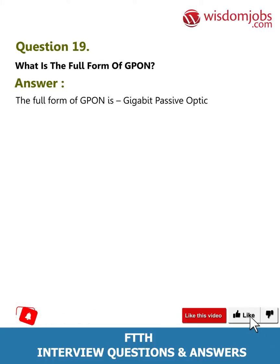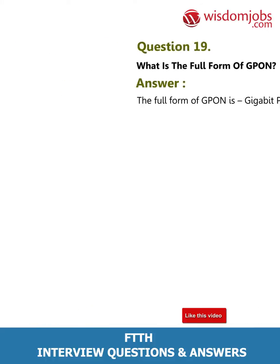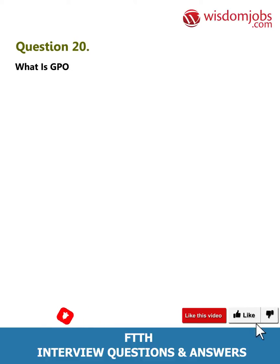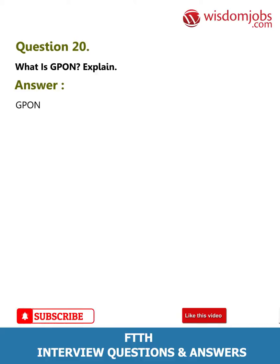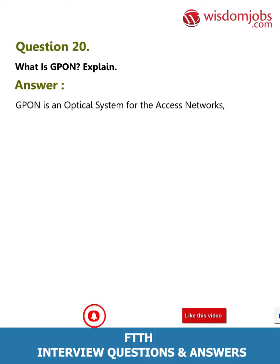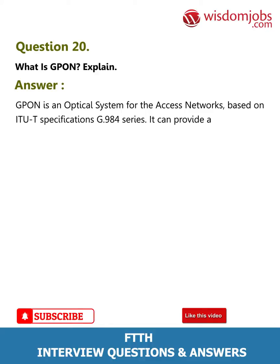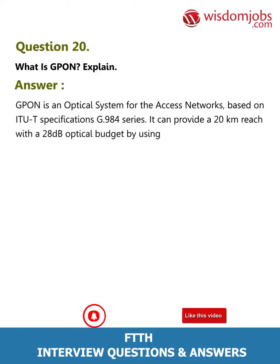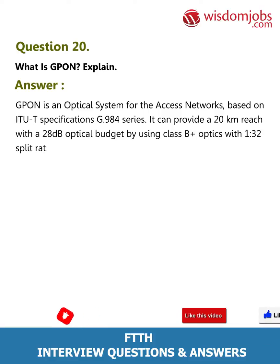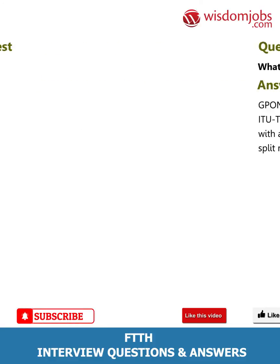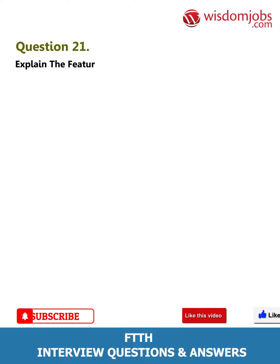Question 20: What is GPON? Explain. Answer: GPON is an optical system for access networks based on ITU-T specifications G.984 series. It can provide a 20 km reach with a 28 dB optical budget by using class P+ optics with a 1:32 split ratio. Question 21: Explain the features of GPON.